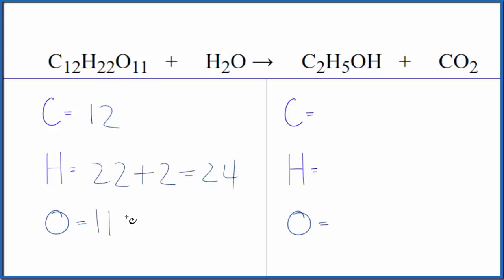Product side we have two carbons, hydrogens five plus the one out here so we have six, oxygens one plus the two here so we have three. Leave the oxygens to last, usually a good idea.